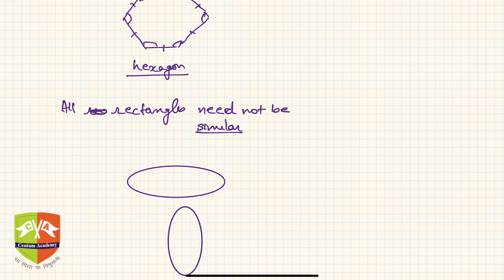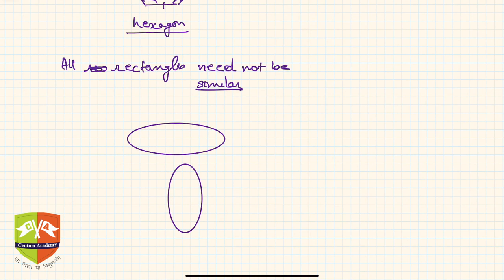For example, if this is one ellipse and this is another ellipse, these two may not be similar. So I hope you understood what are similar geometrical figures and what are non-similar figures.